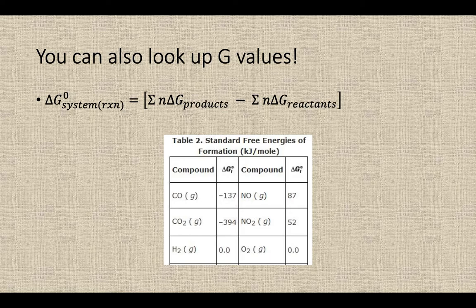You can look up G values, Gibbs free energy values. So in the back of most AP chemistry textbooks, there's a data table of sorts that gives you delta S of reactions, delta H of reactions. They also have delta G of reactions.